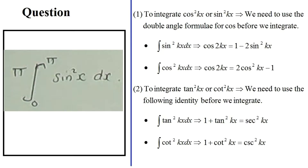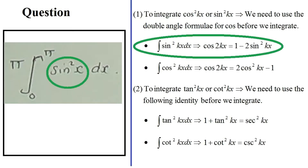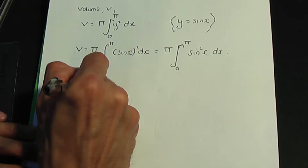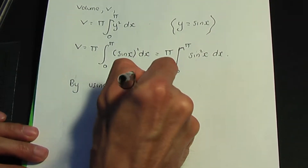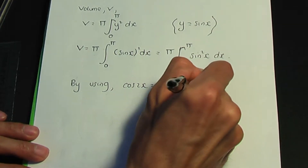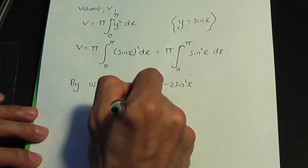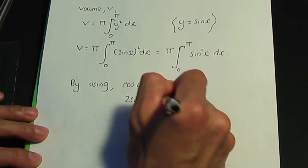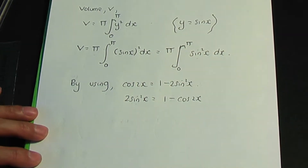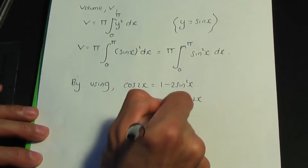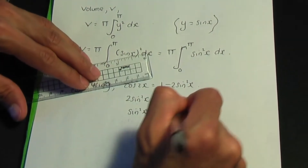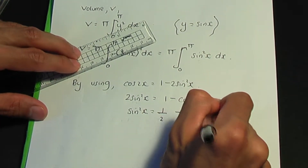To integrate sine squared or cos squared, you need to use a double angle formula for cos. So to integrate sine squared x, we're going to use the double angle formula: cos 2x equals 1 minus 2 sine squared x. Rearranging and dividing by 2, sine squared x therefore equals 1 over 2 minus 1 over 2 cos 2x.